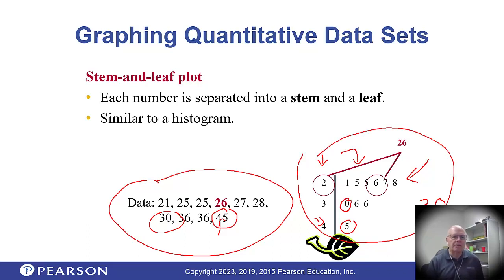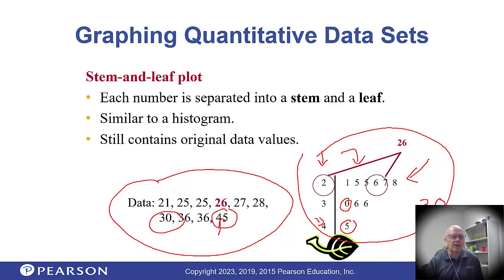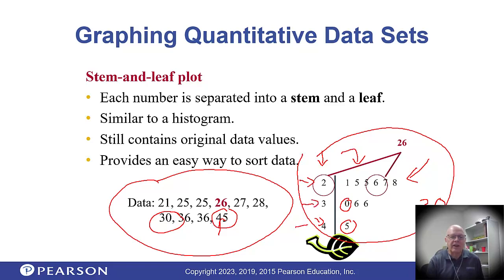It's like a histogram but with the original data values — fantastic. It's also an easy way to sort the data, because in this stem you've got all the 20s here, all the 30s here, all the 40s — you just organize the leaves and you've got them all sorted.